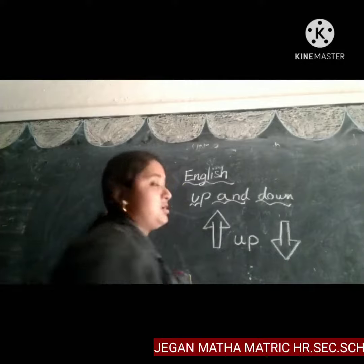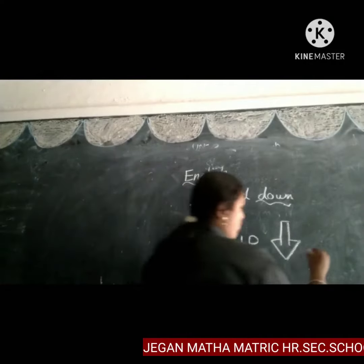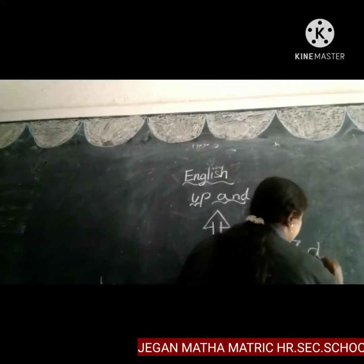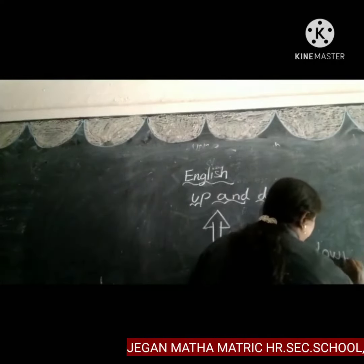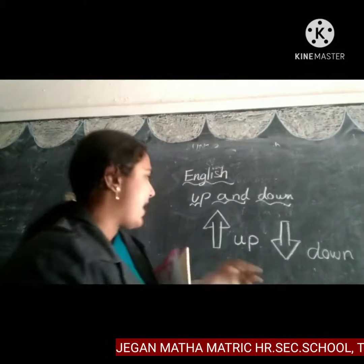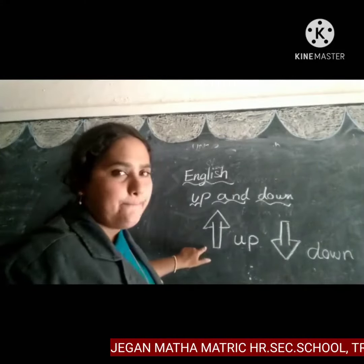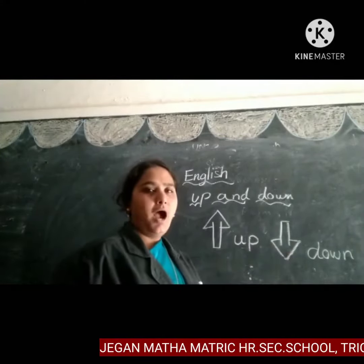What arrow is this, children? It's down. What arrow is this? It's down. So this arrow is up and this arrow is down.